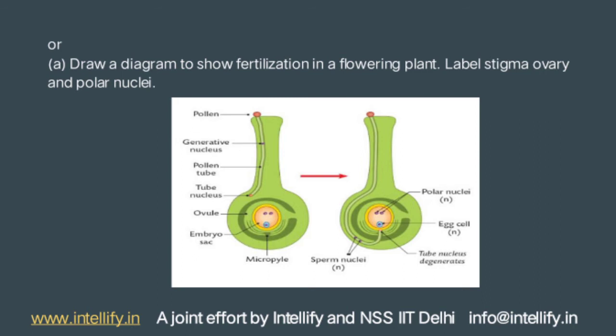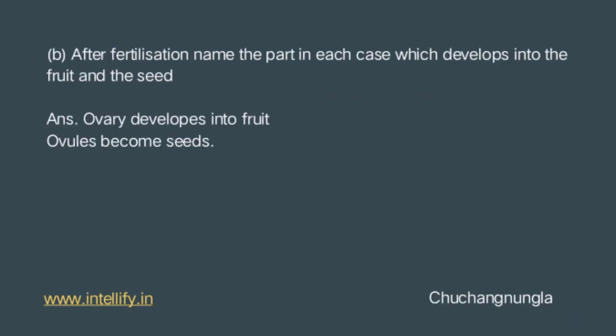The pollen tube breaks into the ovule through the micropyle and bursts into the embryo sac. Here, the male nucleus fuses with the nucleus of an egg inside the ovule, forming a diploid zygote, which later develops into a fruit. B. After fertilization, name the part in each case which develops into the fruit and the seed. From the above discussion, after fertilization, the ovary develops into the fruit and the ovules become seeds.